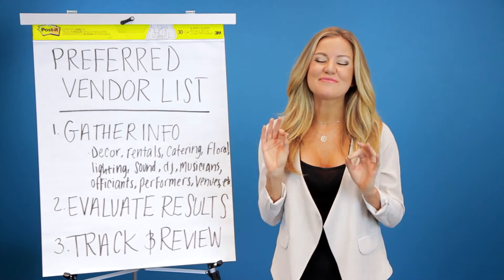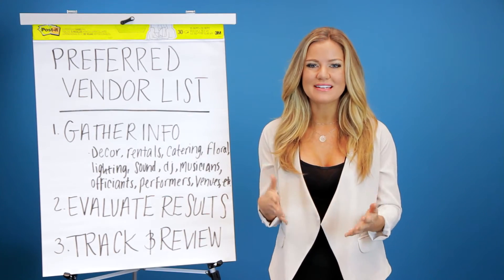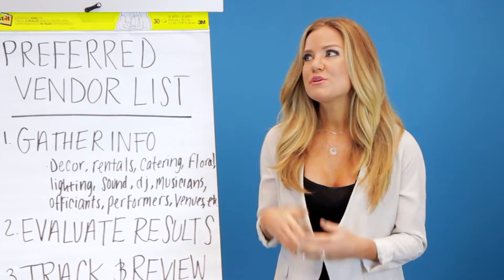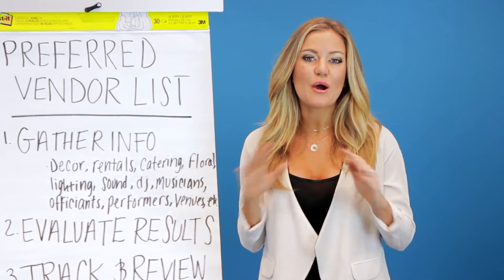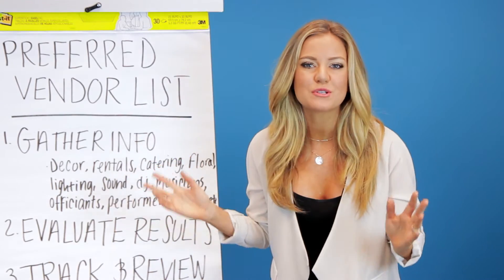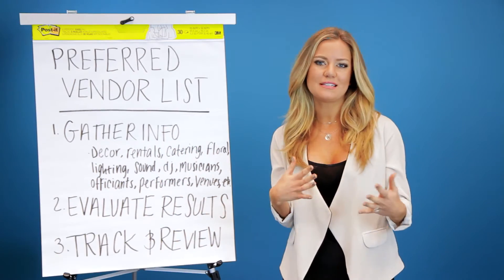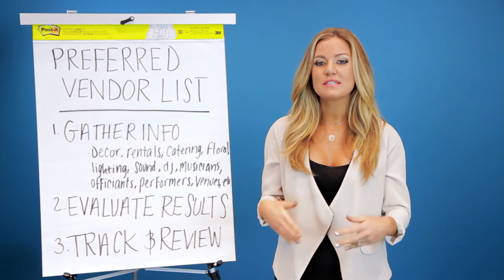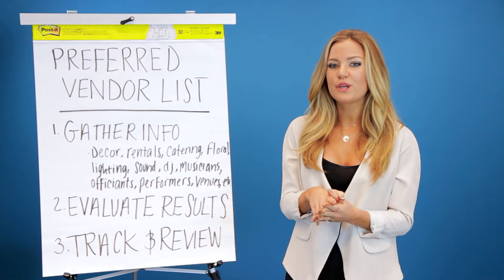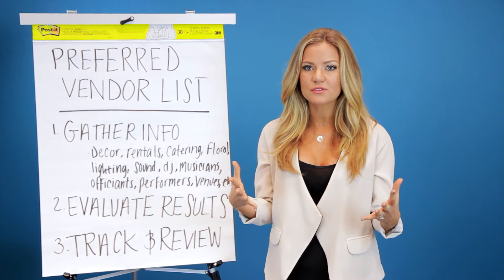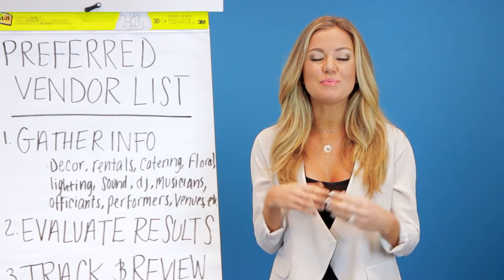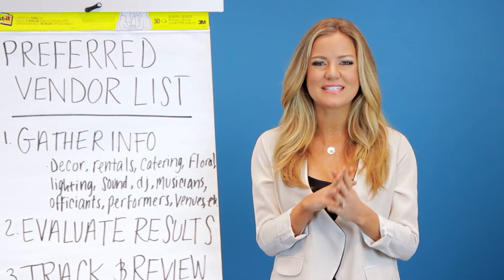A vendor list is really important because it gives you the ability to deliver on the things that you promise to your clients. Say that a client comes to you and they say they want to have a stage with their DJ on it and a bunch of flowers behind them. When you're first talking to this client, you can't make promises and build on those ideas with creative ideas of your own if you don't have working knowledge of the vendors that can deliver these things in your area. So it's really important because it helps you be reliable and deliver on the promises that you make.